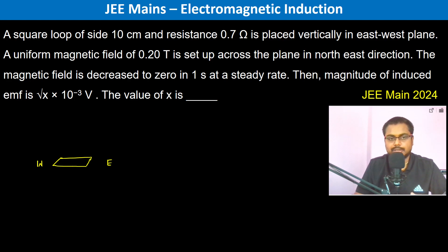A uniform magnetic field is set up in the plane in the Northeast direction, in this direction, which is 0.2 Tesla in the Northeast direction. The magnetic field is decreased to 0 in one second at a steady rate.